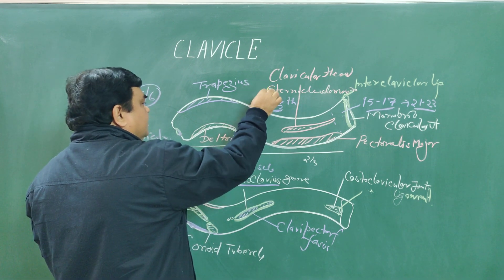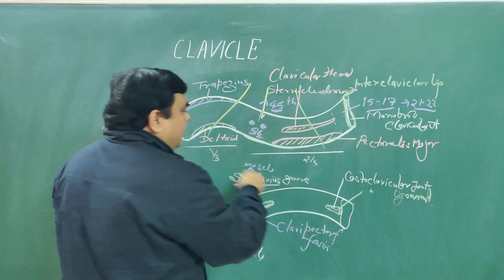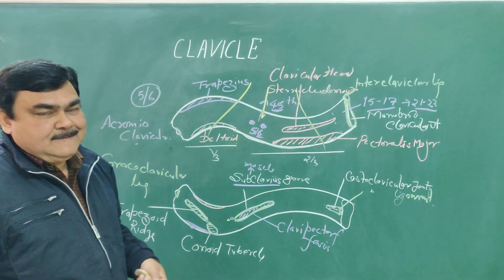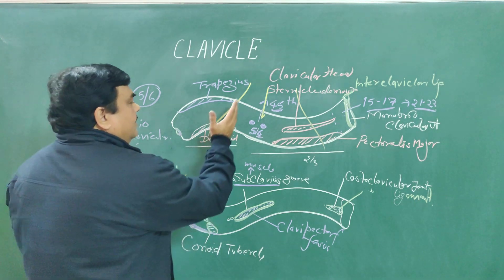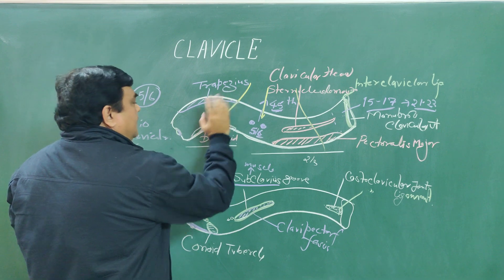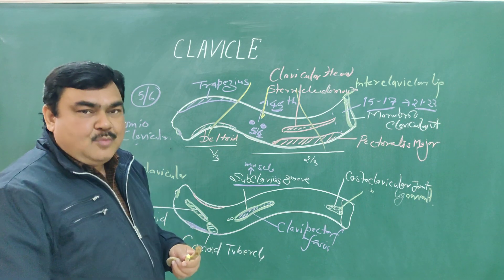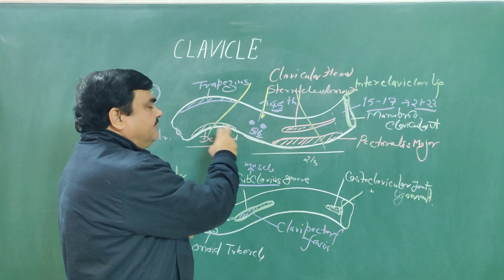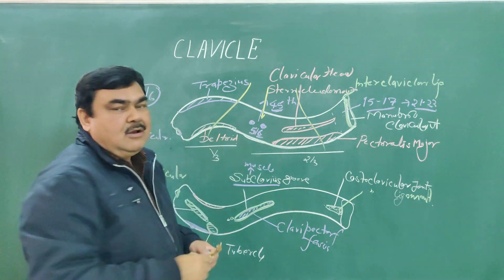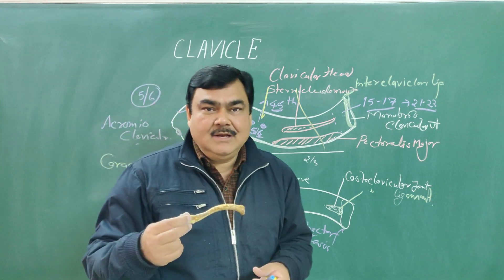This bone is crossed by the supraclavicular nerves — both lateral and medial supraclavicular nerves cross this bone and pierce here. At the junction of the lateral one-third and medial two-thirds, where the two curvatures meet, this is the weakest point of the bone and the most common site of fracture.